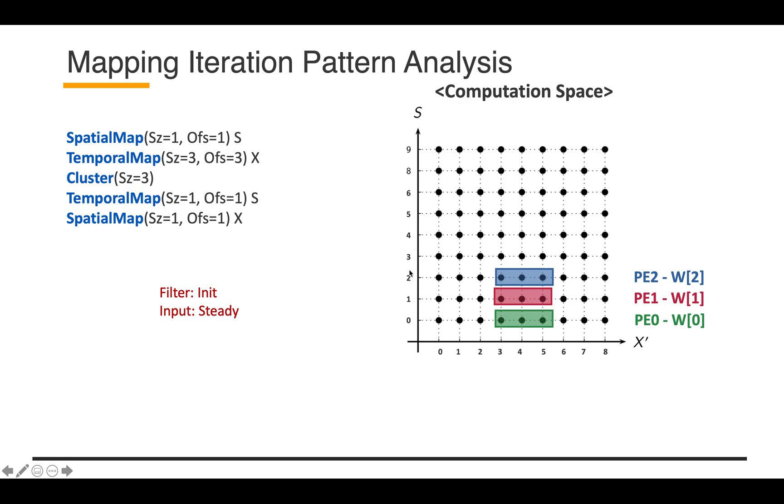In this case, the weight value assigned to each PE didn't change. However, the output and input activation assigned to each PE has updated. They are in the middle of the entire iteration, so that's why the state is called steady state.